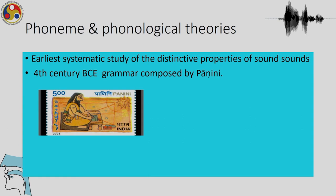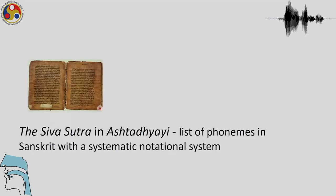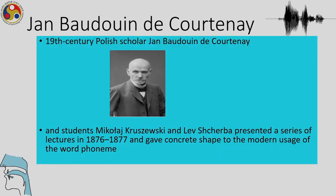There have been earliest attempts to study phonetic properties of sounds. The 4th century BC grammar composed by Panini is one of them. The Shiva Sutra in Ashtadhyayi has a list of phonemes in Sanskrit with a systematic notational system, and this is considered to be the earliest. There were also earlier attempts by the Greeks and some Icelandic documents showing systematic study of sounds. After that there were major developments in the 19th century when Polish scholar Jan Baudouin de Courtenay and his students Kruszewski and Scherba presented a series of lectures in 1876 to 1877, giving concrete shape to the modern usage of the word phoneme.